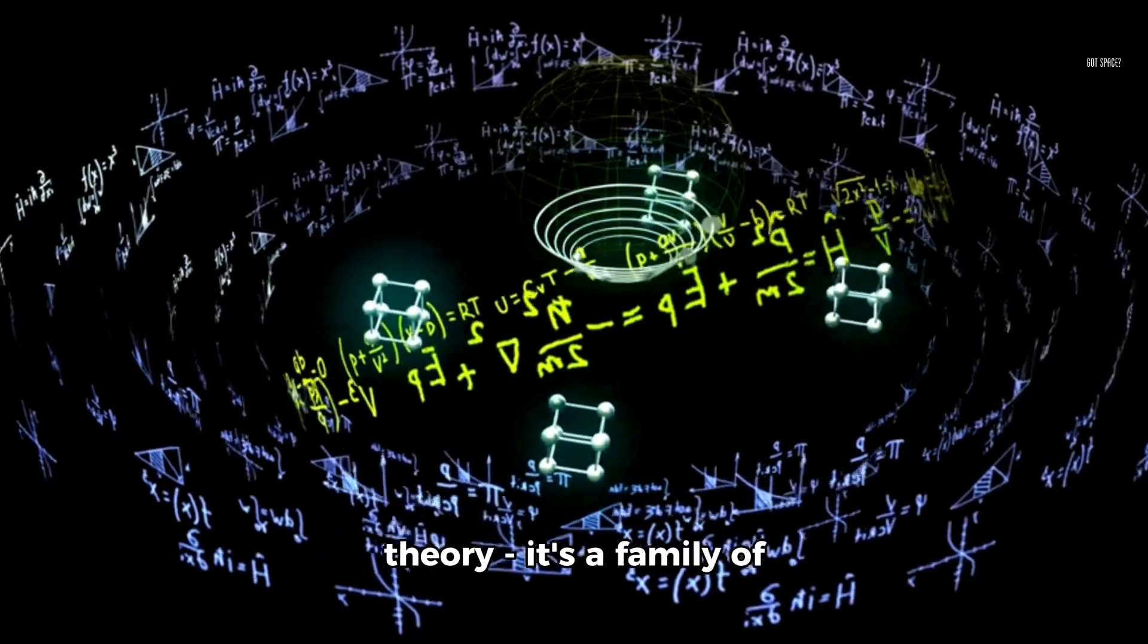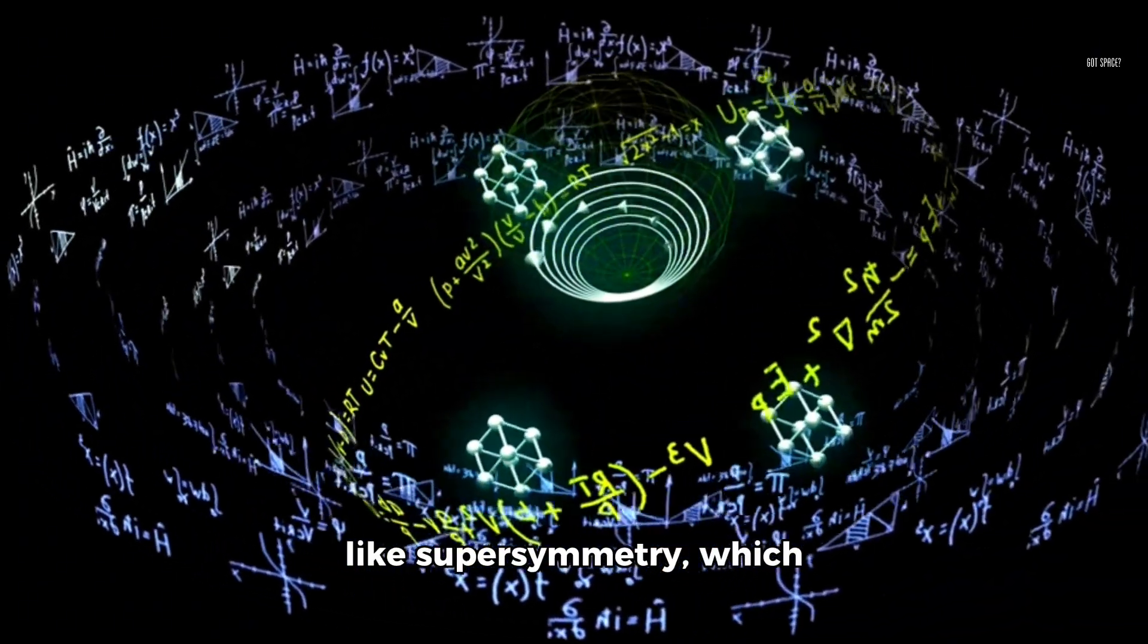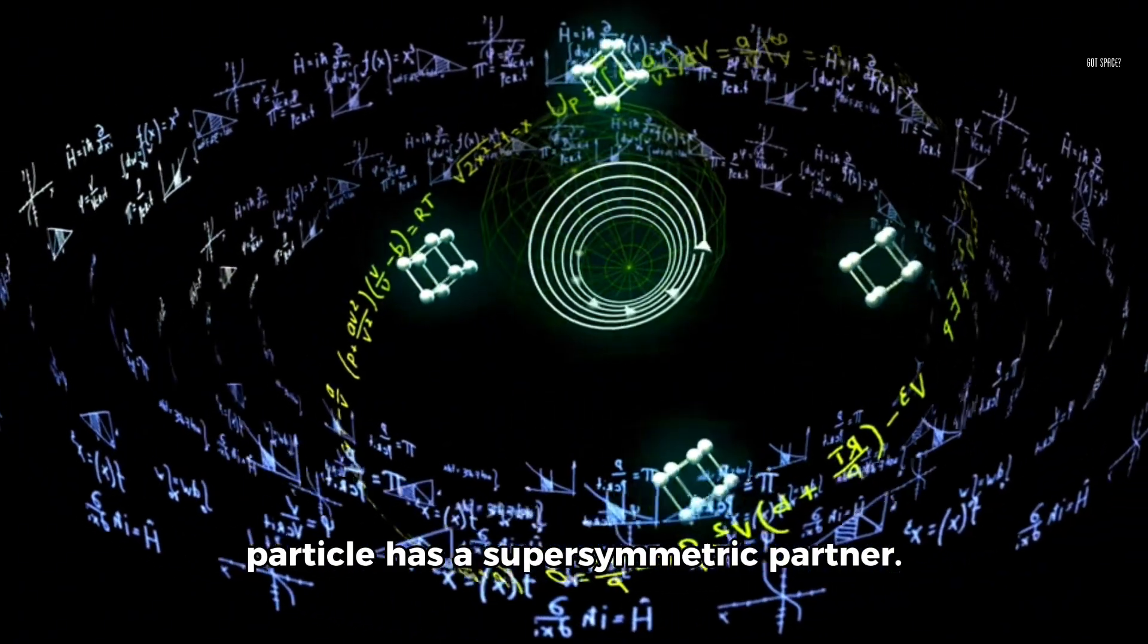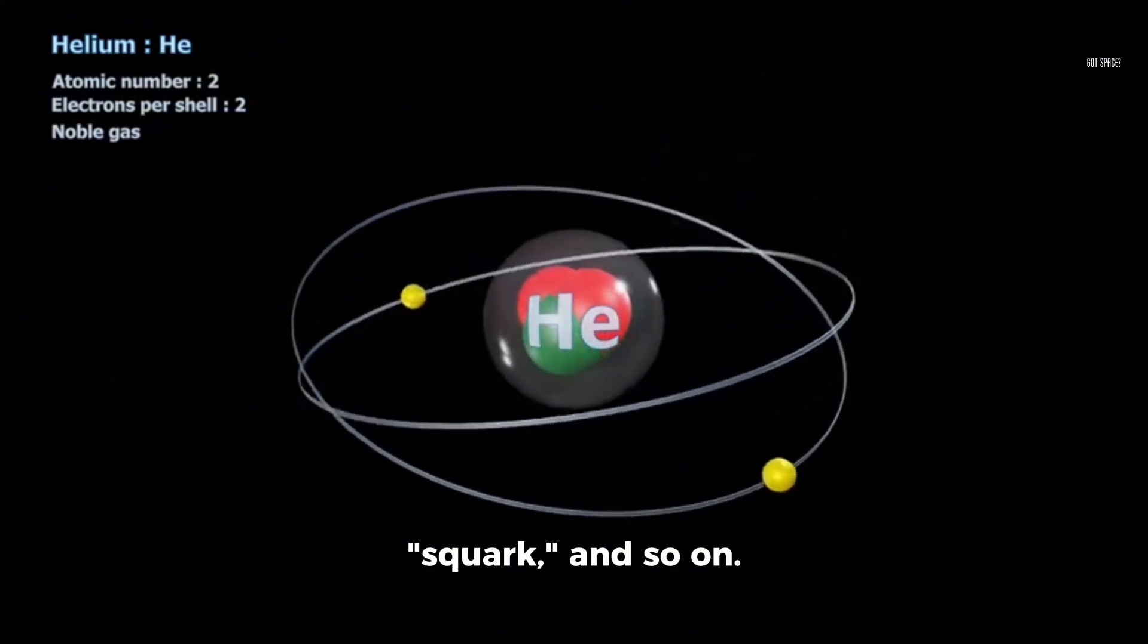But string theory isn't just one theory, it's a family of theories, including concepts like supersymmetry, which proposes that every known particle has a supersymmetric partner. The electron has its selectron, the quark its squark, and so on.